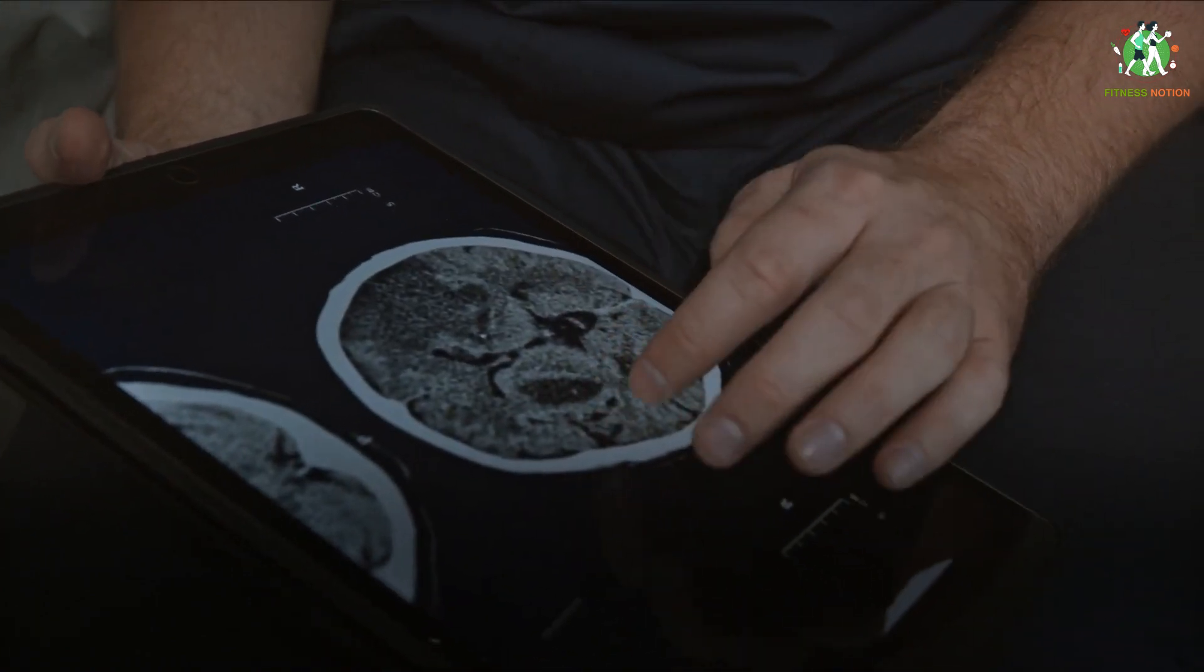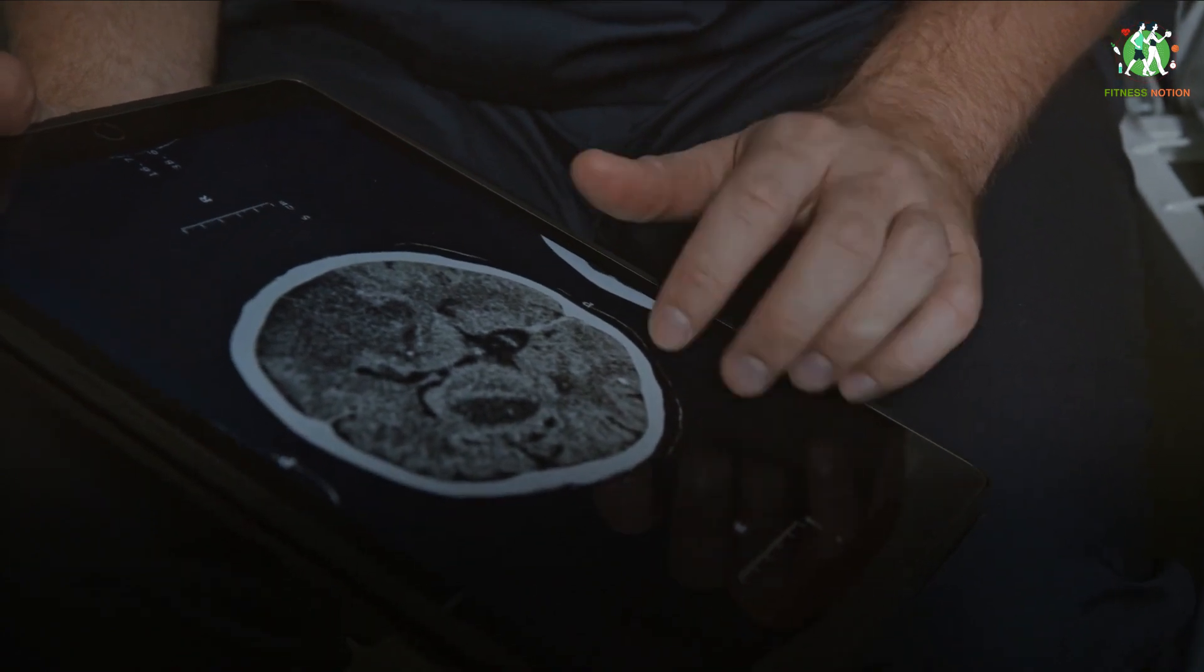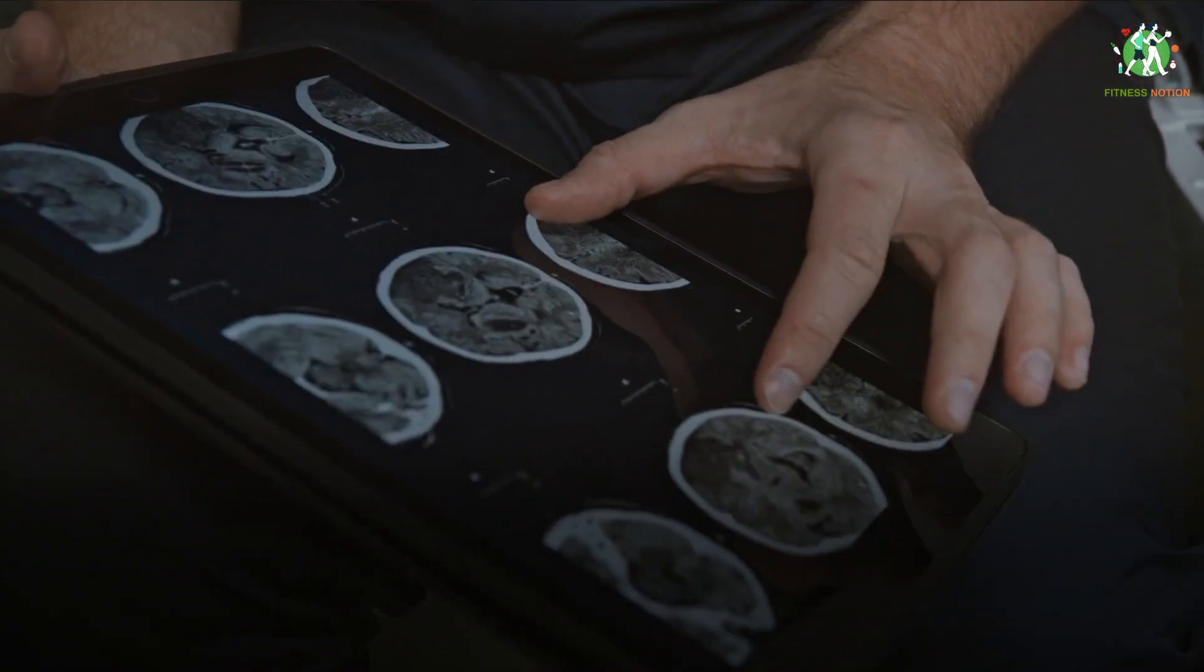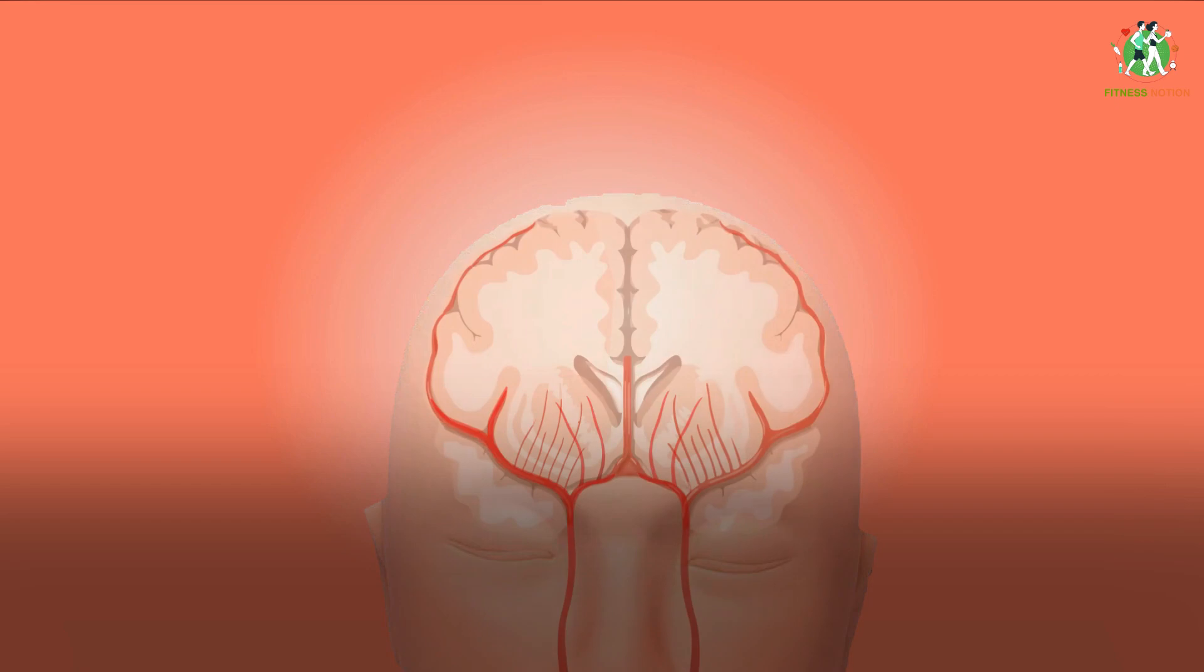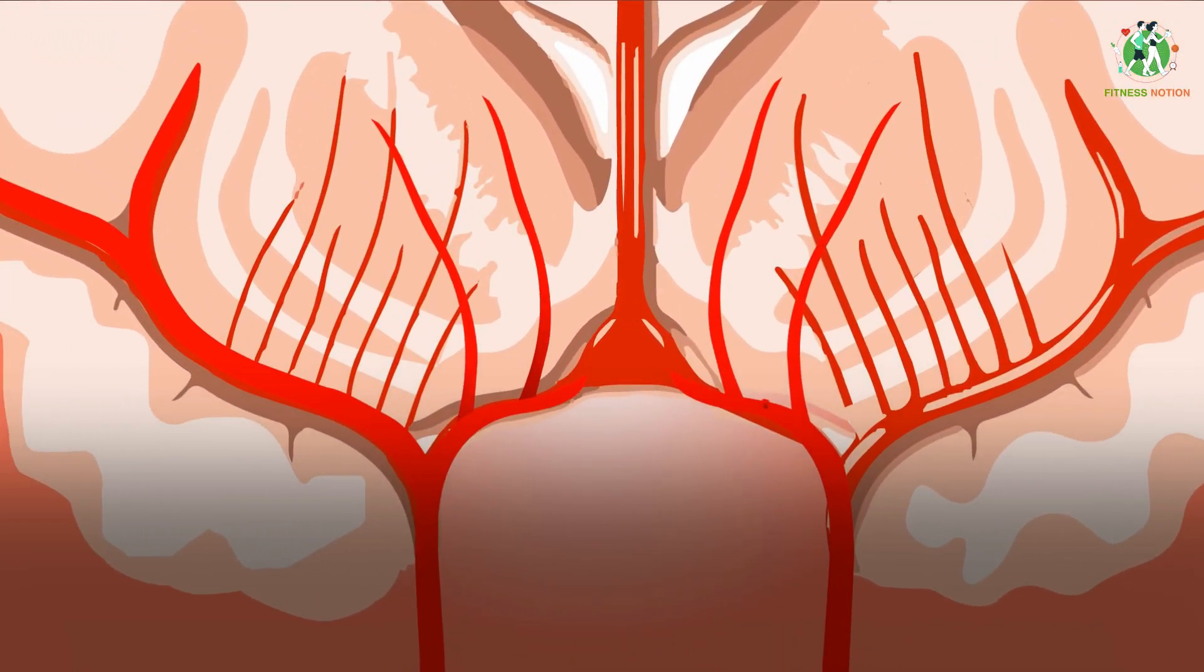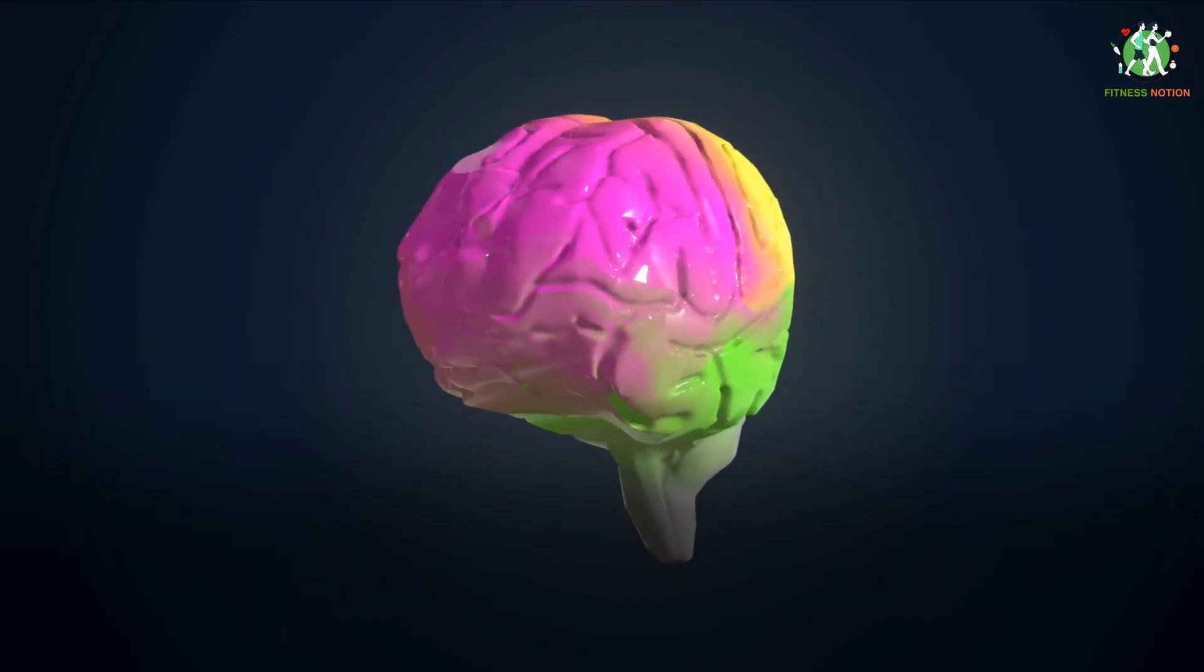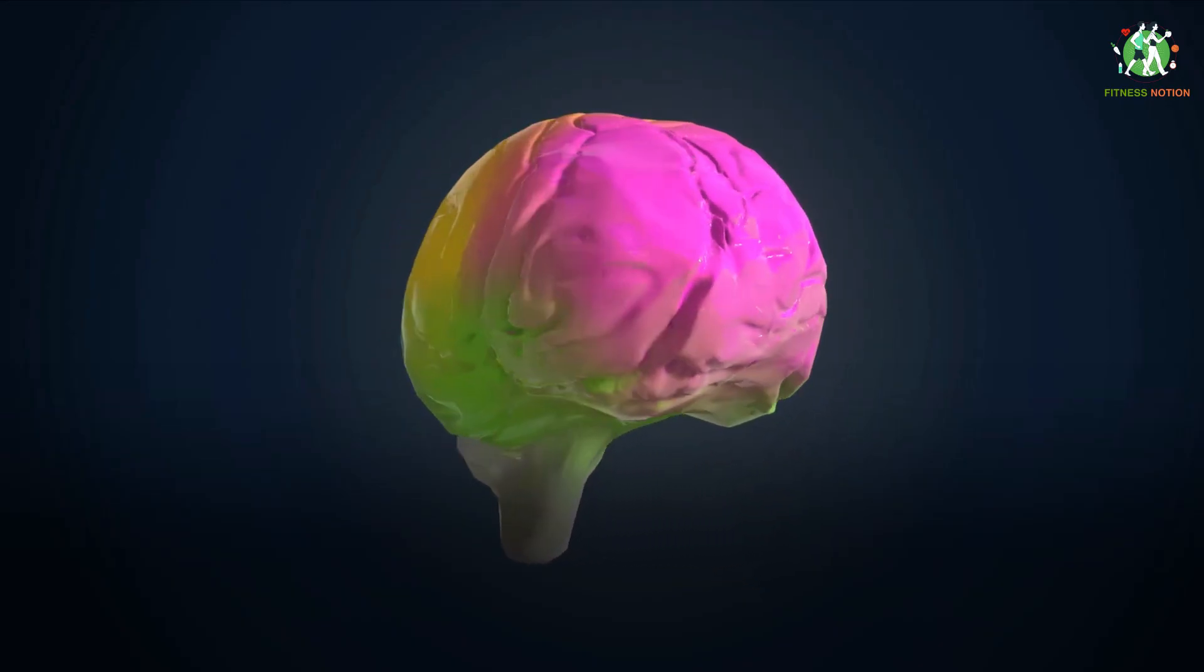We know that omega-3 fatty acids account for around 60 percent of the brain's composition, with DHA, a form of omega-3 fatty acid found in fish, serving as the primary type and being responsible for ocular and mental development. Omega-3 fatty acids, which may be found in olive oil and oily fish such as salmon, herring, and sardines, are critical for brain development.